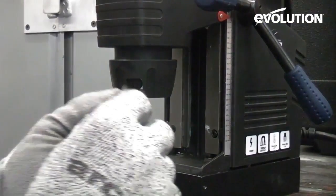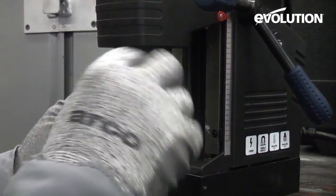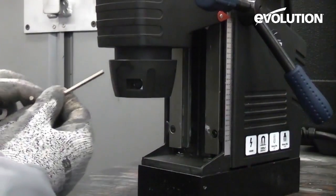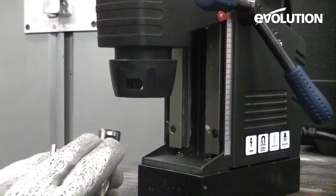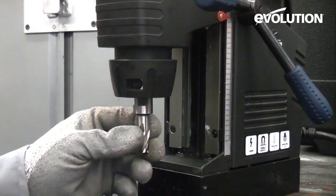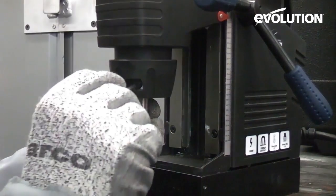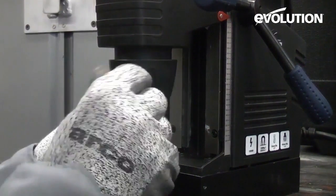So all you need to do is take the hex key, undo the two grub screws, and then ensure the two flats are facing forward. Insert that in the machine and then tighten up the grub screws.